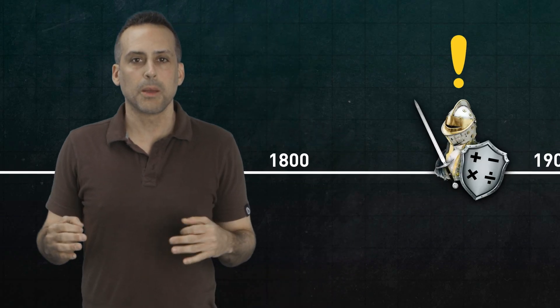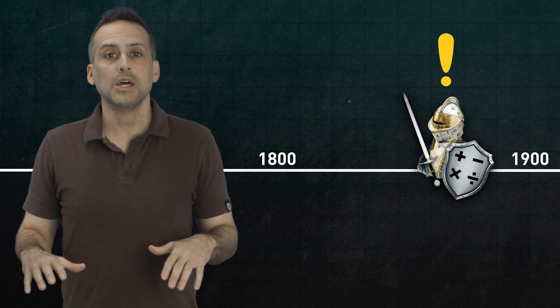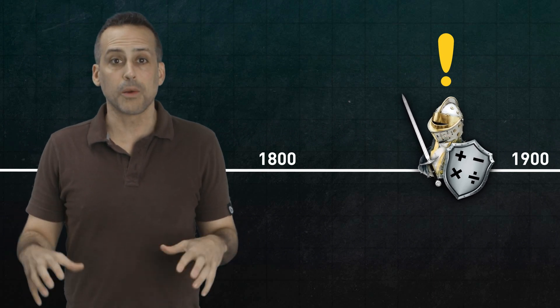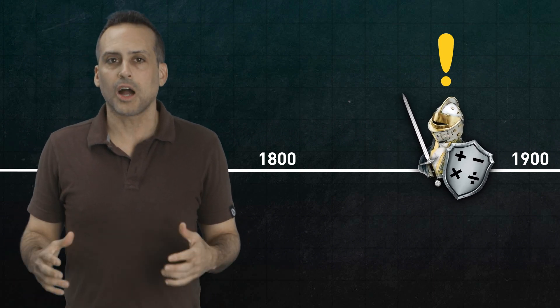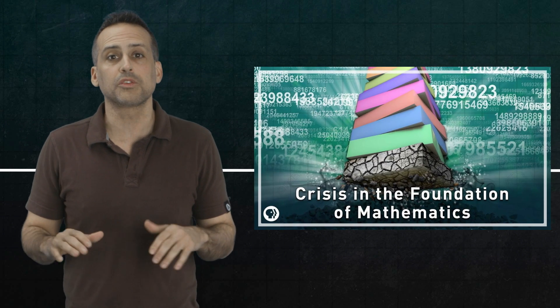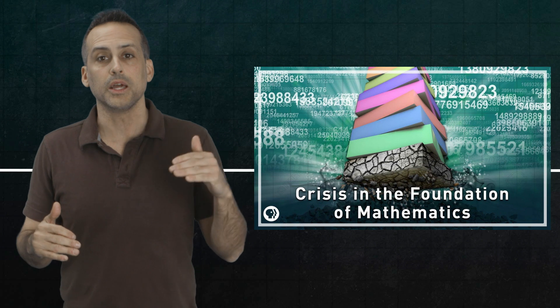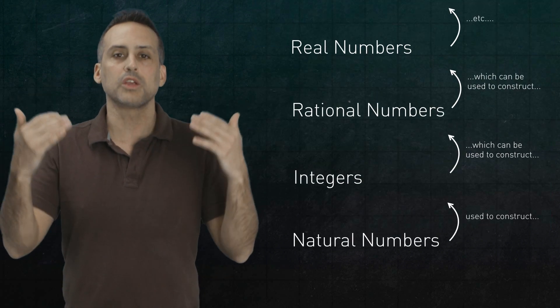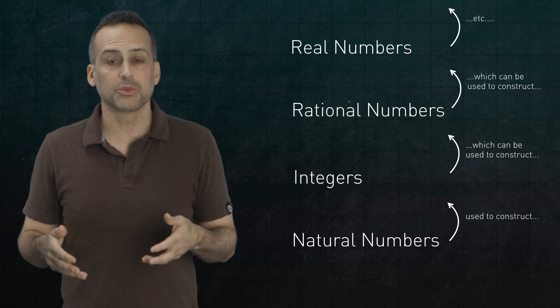In the late 19th century, mathematicians were on a quest to put all of mathematics on firm, logical footing. Kelsey talked about this in a previous video, where she mentioned, among other things, that the number system can be constructed hierarchically, starting from the natural numbers and working your way up. But what about the natural numbers themselves?